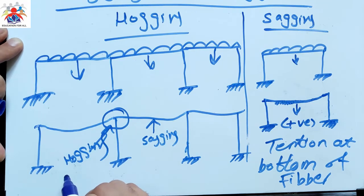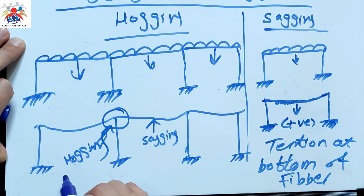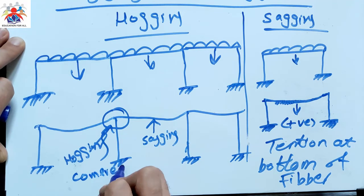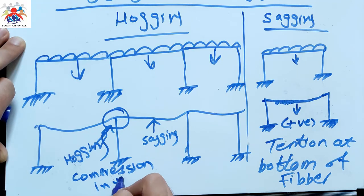So in this part, what happens? Compression is at the bottom. Compression in the bottom of fiber in hogging is compression, compression in the bottom of fibers.